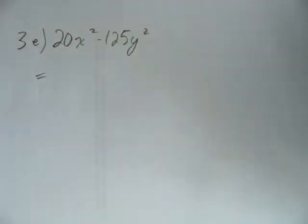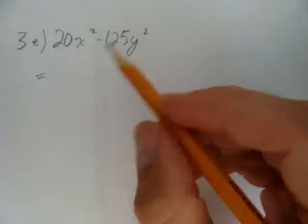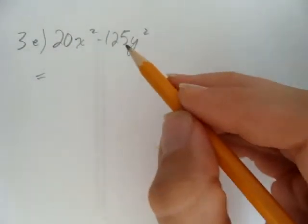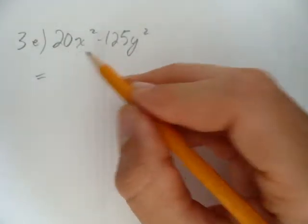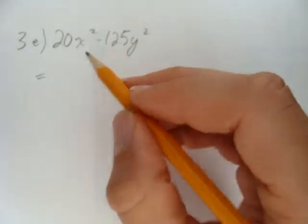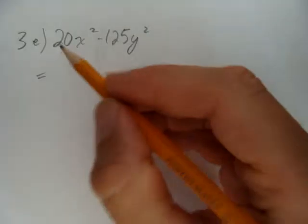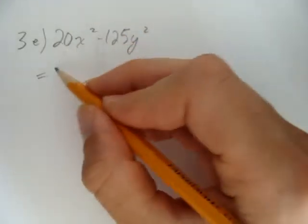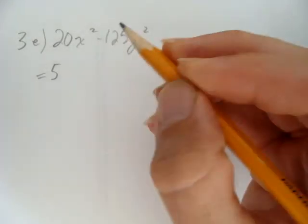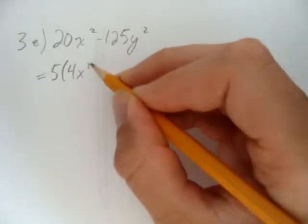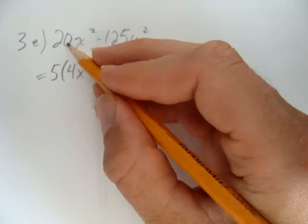This question can be a bit tricky for some people, because they look and they're not sure how to factor this. The first thing you always want to do in factoring is look for a common factor, which indeed we have here. What goes into 20 that goes into 125? The answer is 5. So we can factor out a 5 from here.